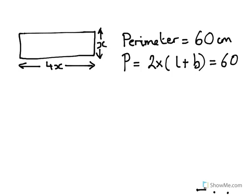The first thing we could do is actually divide both sides of our equation by 2. Why would we do that? Well, it gets an expression for the length plus the breadth. Just the length, one length and one breadth is 60 divided by 2, which is 30.